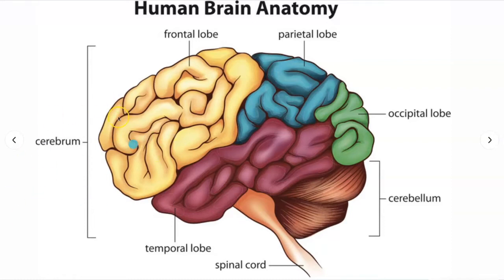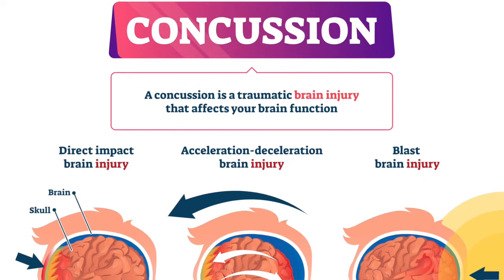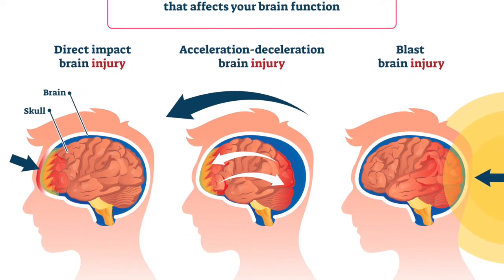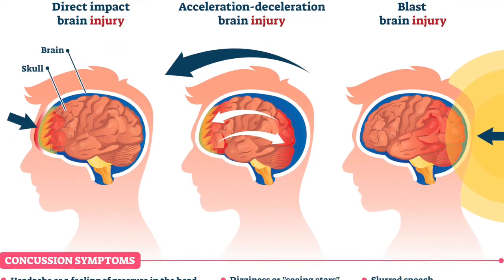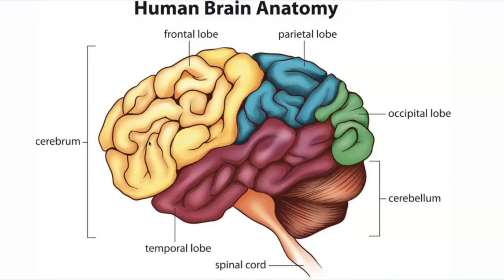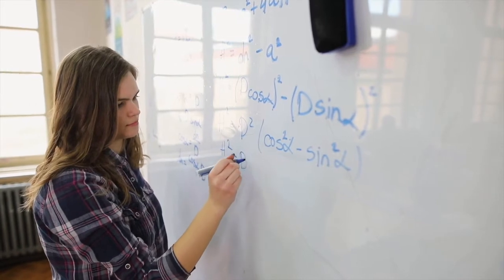This is where your forehead would be, just to give you a little reference. This is the back of your head. The frontal lobe is located directly behind your forehead and it's the largest lobe in the human brain. It's also the most common region of injury in a traumatic brain injury. Just visualize how your brain — if you're in a car accident or somebody hits you — your brain is going to get smashed forward and backwards. So that's coup and contrecoup. This is the area responsible for higher-level executive functions.